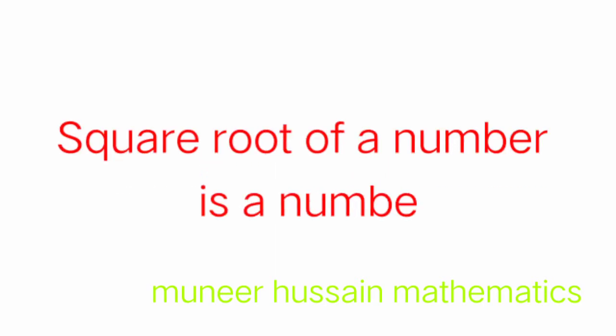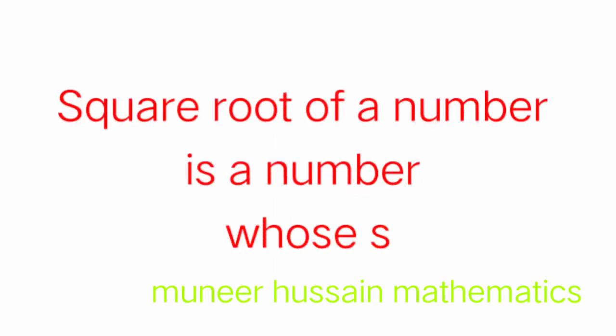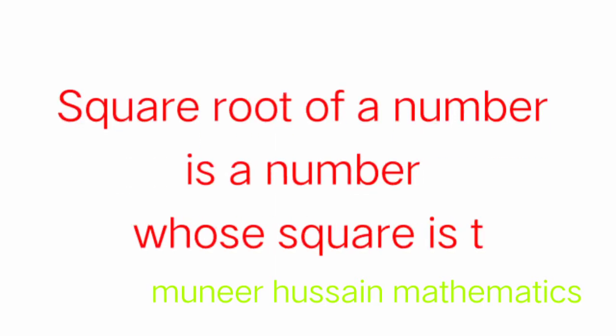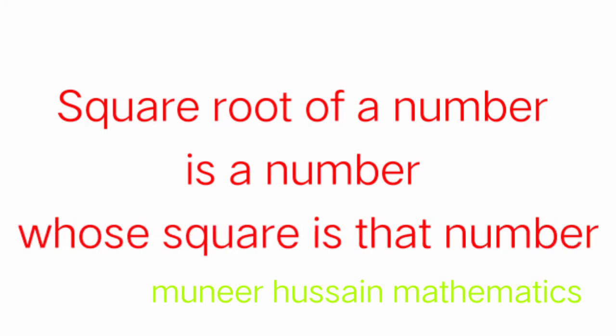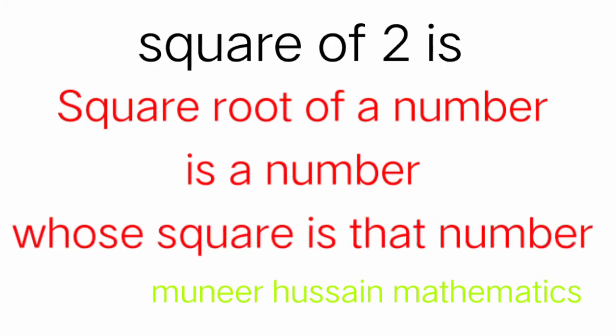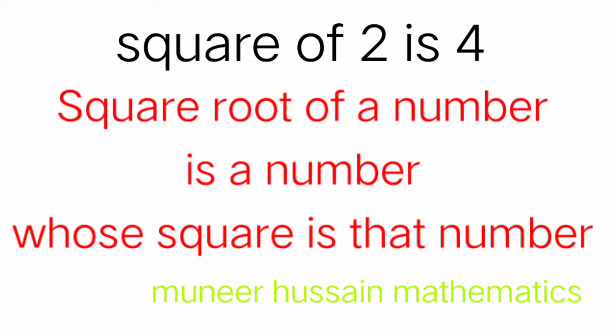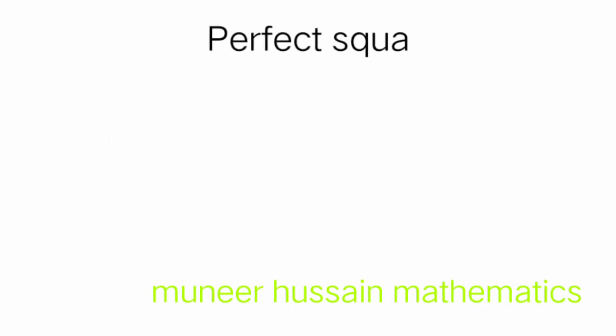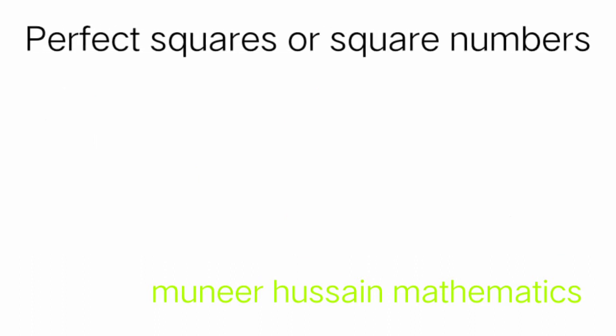First of all, we shall see what is the definition of square root. The square root of a number is a number whose square is that number. To understand this, we know that the square root of 4 is 2, because the square of 2 is 4.